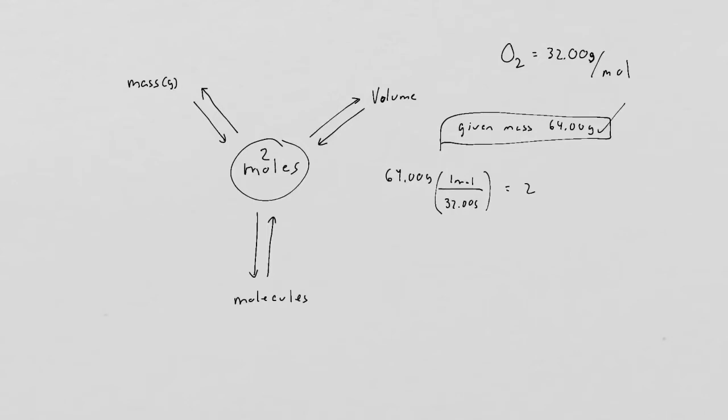So what we did was we divided by the GFM, the gram formula mass or the molar mass. So whenever you want to go from a given mass, like a given to this mole mass, into moles, we basically divide by the GFM.